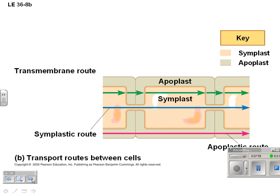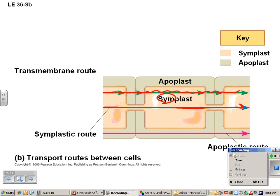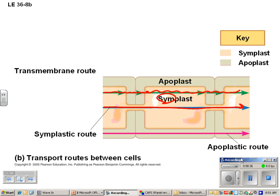There are two ways water can be transported between cells. You can have the symplastic route, which means water travels right through the plasmodesmata — 'sym' means together. You can have the apoplastic route, where water diffuses through the cell wall and into the next cell, then through the next cell wall. Just in case you see those terms: symplast and apoplast.